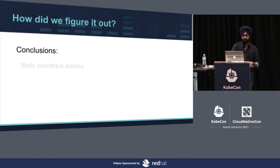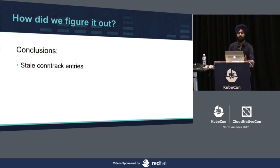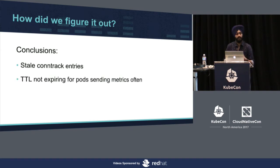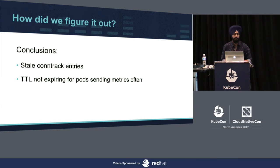Applications that were not sending metrics often would have their conntrack entries eventually expire and they'd be able to send metrics again. But applications using the same socket pairs and sending metrics very often — that traffic would simply be black-holed. We realized the problem was stale conntrack entries where the TTL was not expiring for pods sending metrics very often.